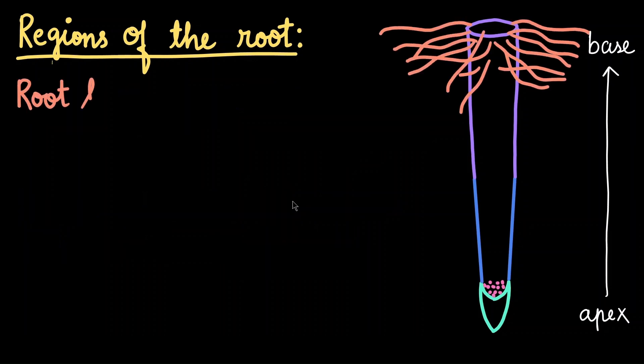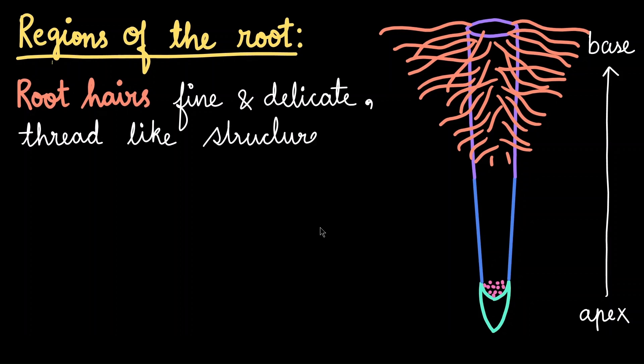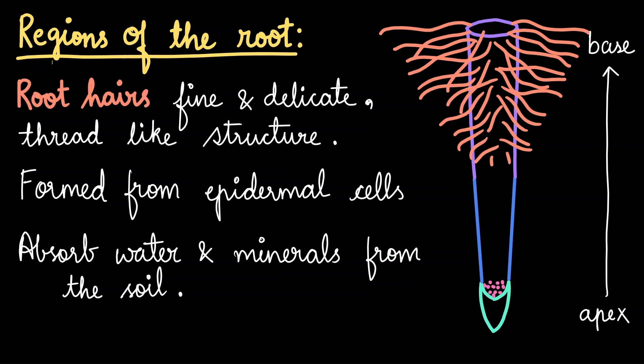Let's discuss this with the help of a fascinating example in terms of root hairs. Root hairs are thin, delicate, thread-like structures which develop on the outer regions of the region of maturation. Now, the root hairs arise from specific cells called epidermal cells. So not all the cells here are able to give rise to this root hair. And the function of the root hair is to absorb water and minerals from the soil. The root hairs increase the surface area of the root, allowing it to absorb more water and minerals from the soil.